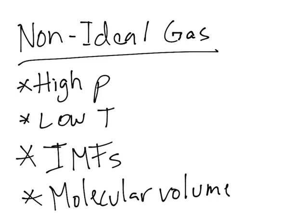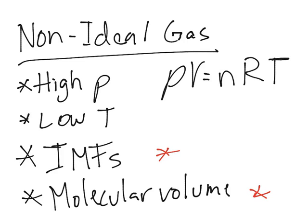So we cannot use the ideal gas law here. PV equals nRT. That doesn't work here, because we have two more factors: IMFs and molecular volume. So we have to modify this equation to add these two factors.